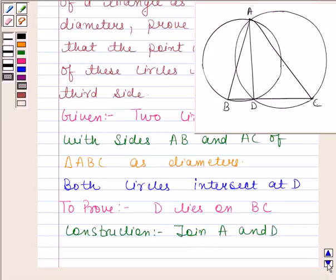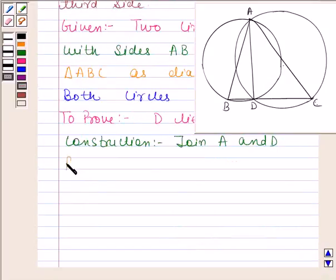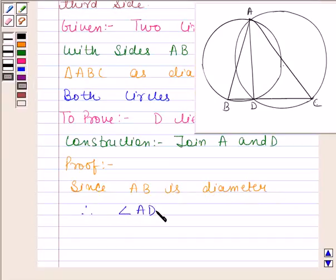Let us now begin with the proof. Since AB is the diameter, therefore angle ADB is equal to 90 degrees. This angle is equal to 90 degrees because angle in a semicircle is a right angle.